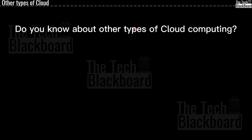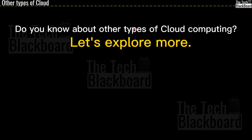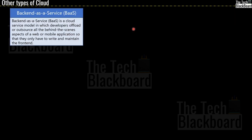So are these the only types of cloud? If you talk on a very high level, yes, but when you take a little deep dive, there are many more. Let me quickly list down the other major ones — I will not go into details as this is out of scope for a fundamentals course, but you should know all of them. The first one is BaaS or Backend as a Service. BaaS is a cloud service model in which developers offload or outsource all the behind-the-scenes aspects of a web or mobile application so that they only have to write and maintain the front end — for example, simply calling an API for authentication and storage without worrying about the implementation or infrastructure.